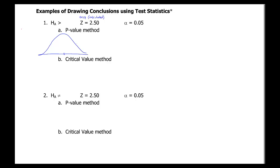The z given is 2.5, which would be out to the right. The p-value is the area beyond the test statistic — this shaded area to the right. To get that area from the z distribution, we use the normal CDF function: minimum value 2.5, maximum 99, mean 0, standard deviation 1. That gives us 0.0062. Taking our p-value 0.0062 and comparing it to alpha 0.05 — our p-value is less than alpha, so we reject the null hypothesis.